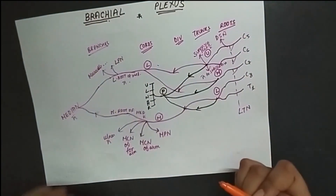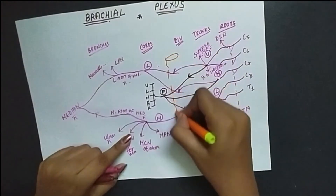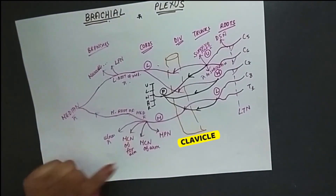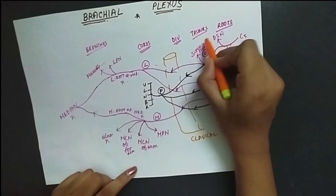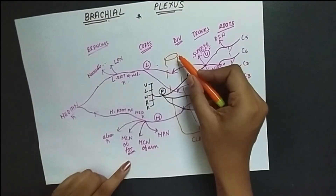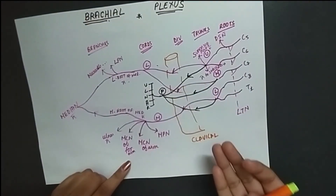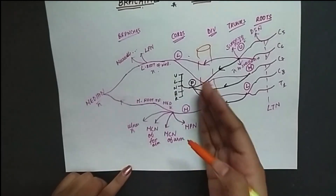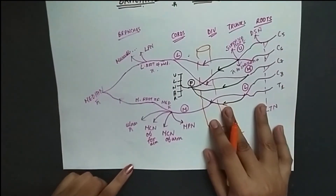One important structure is the clavicle, which divides the brachial plexus into three regions. The roots and trunks lie in the supraclavicular region — above the clavicle. The divisions lie in the retroclavicular region — posterior or below the clavicle. The cords and branches lie in the infraclavicular region — below the clavicle.